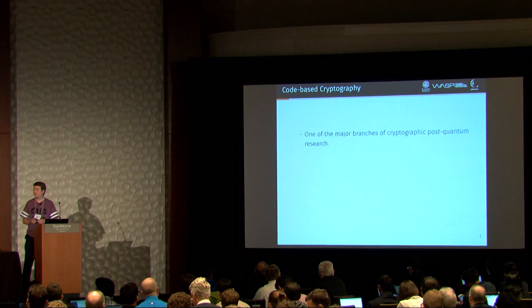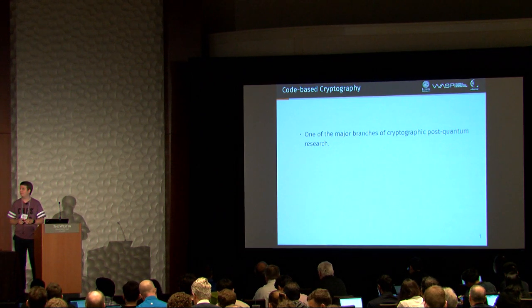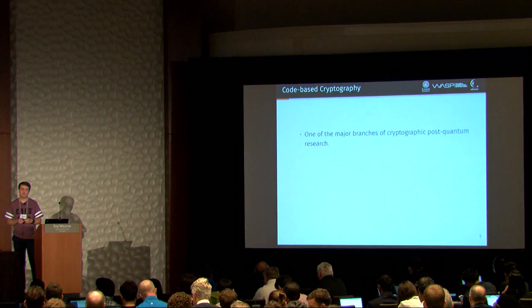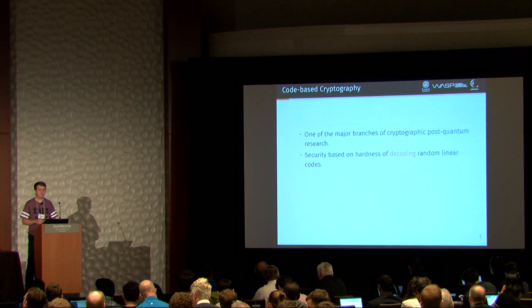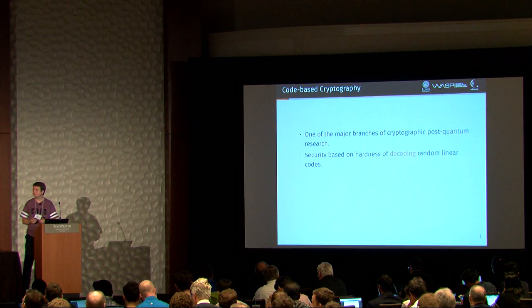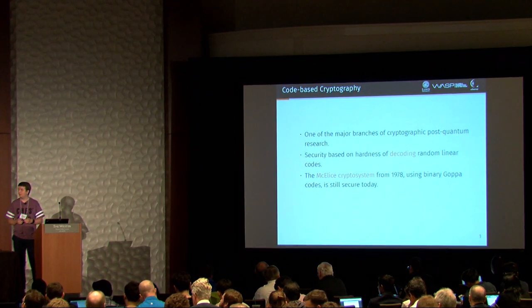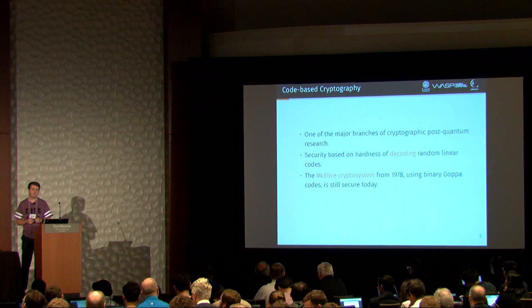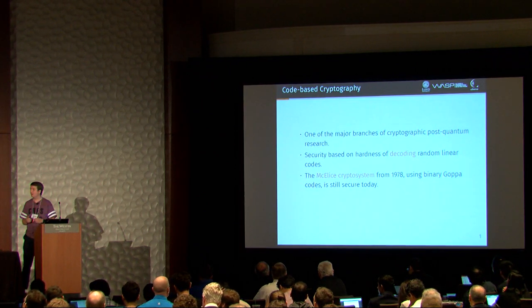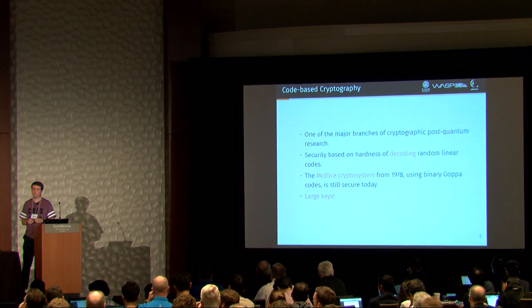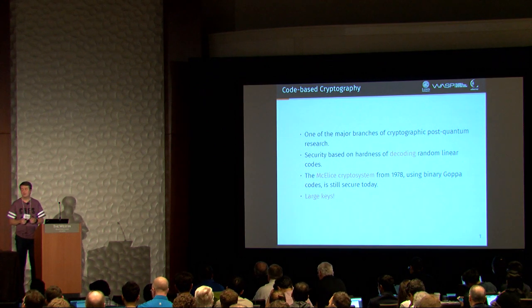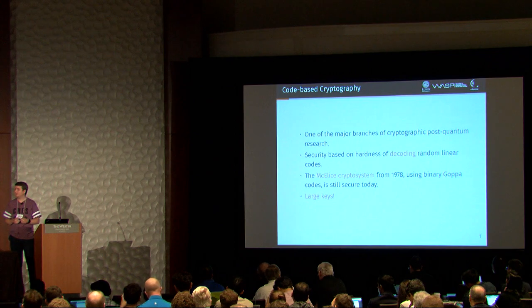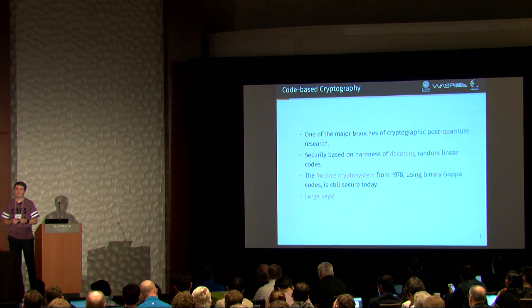Code-based cryptography is one of the major branches of cryptographic post-quantum research right now, and we have security based on the hardness of decoding random linear codes. The most famous example is the McEliece cryptosystem from 1978, and it has some problems with large keys, but otherwise it's a very good system. But the large keys are the reason why we have several variants.